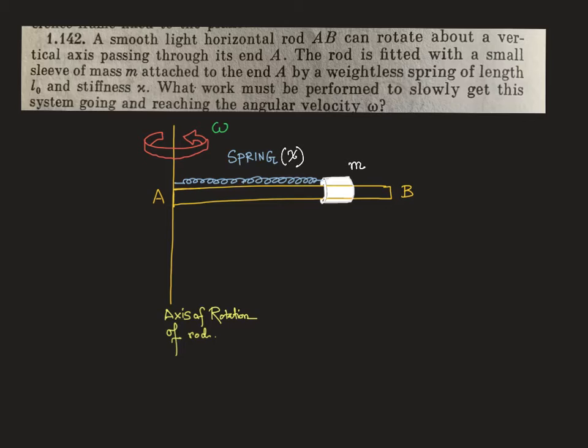Here the spring has some natural length, so l0 is the free length, and delta l is the extension in the spring. So the present length is actually l0 plus delta l.